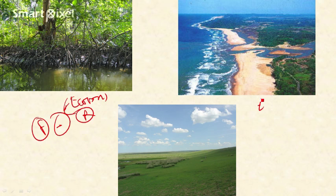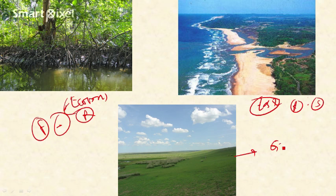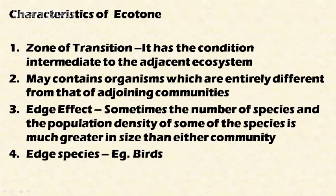Estuary is the zone of transition between the freshwater ecosystem (river ecosystem) and the saltwater ecosystem, so estuary is also one kind of ecotone. The third example is the grassland ecotone, which is the zone of transition between the tropical forest ecosystem and the desert ecosystem.